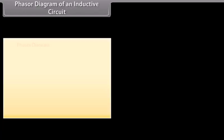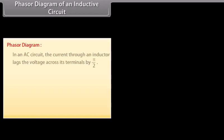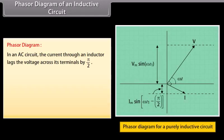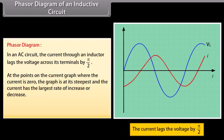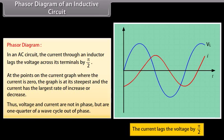Phasor diagram of an inductive circuit: in an AC circuit, the current through an inductor lags the voltage across its terminals by π/2. At the points on the current graph where the current is 0, the graph is at its steepest and the current has the largest rate of increase or decrease. Thus, voltage and current are not in phase but are one quarter of a wave cycle out of phase.